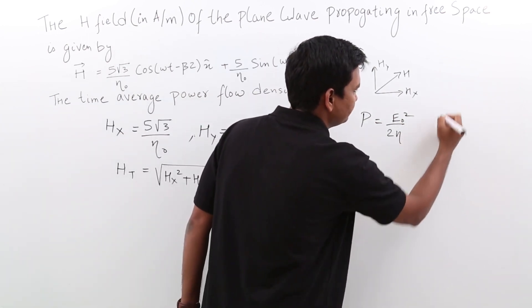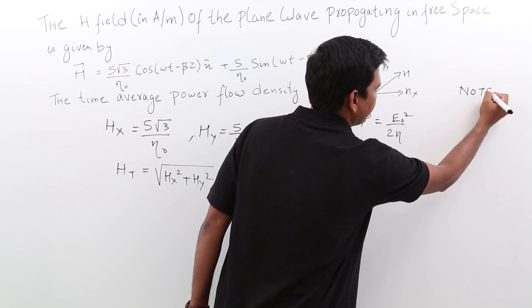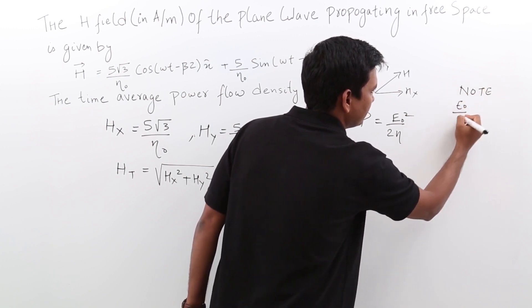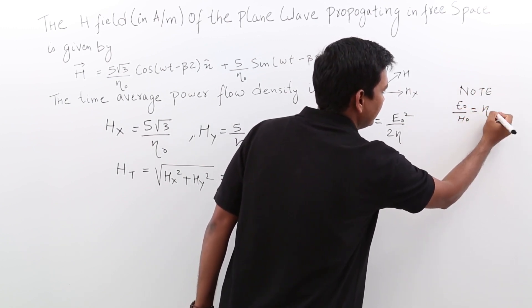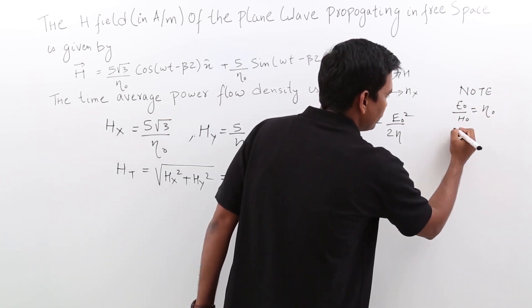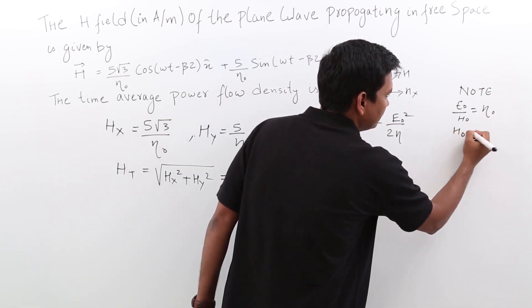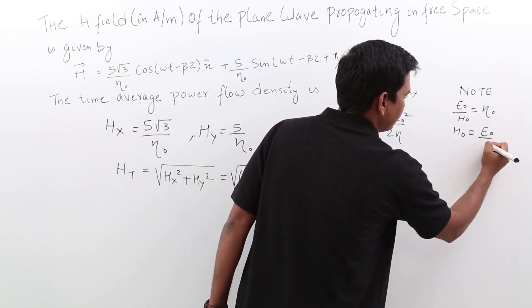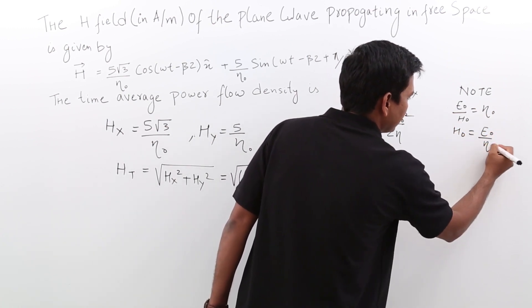So I know that E naught by H naught is eta naught. So what would be H naught? H naught would be E naught by eta naught.